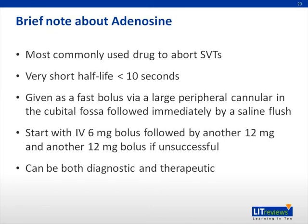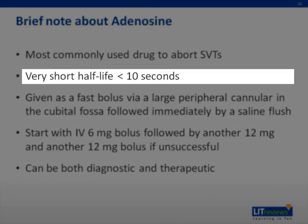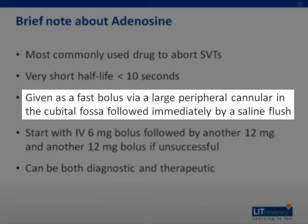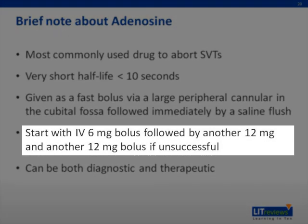A little more about adenosine: it is the most commonly used drug to abort SVTs, particularly favored because of its fast onset and very short half-life of less than 10 seconds. It is given as a fast bolus via a large peripheral cannula in the antecubital fossa, followed immediately by a saline flush. We usually start with an IV 6 mg bolus, followed by a 12 mg bolus if unsuccessful, and another 12 mg bolus if still unsuccessful. If still unsuccessful after three doses, other pharmacological agents can be used, or synchronized cardioversion. The ECG should also be reviewed to ensure it is not another rhythm causing the tachycardia.